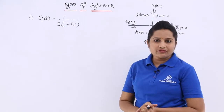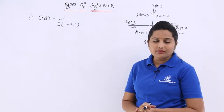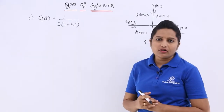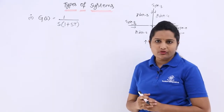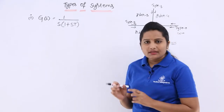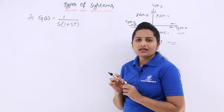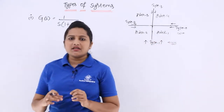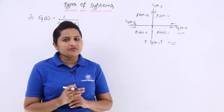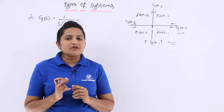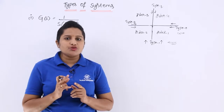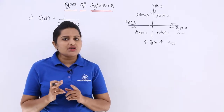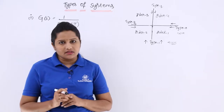This is the transfer function of the system for which we need to find out the polar plot or Nyquist plot. As I told you, the polar plot or Nyquist plot shape is dependent upon the type and order of the system. First, we need to know which type the system is and which order it is.